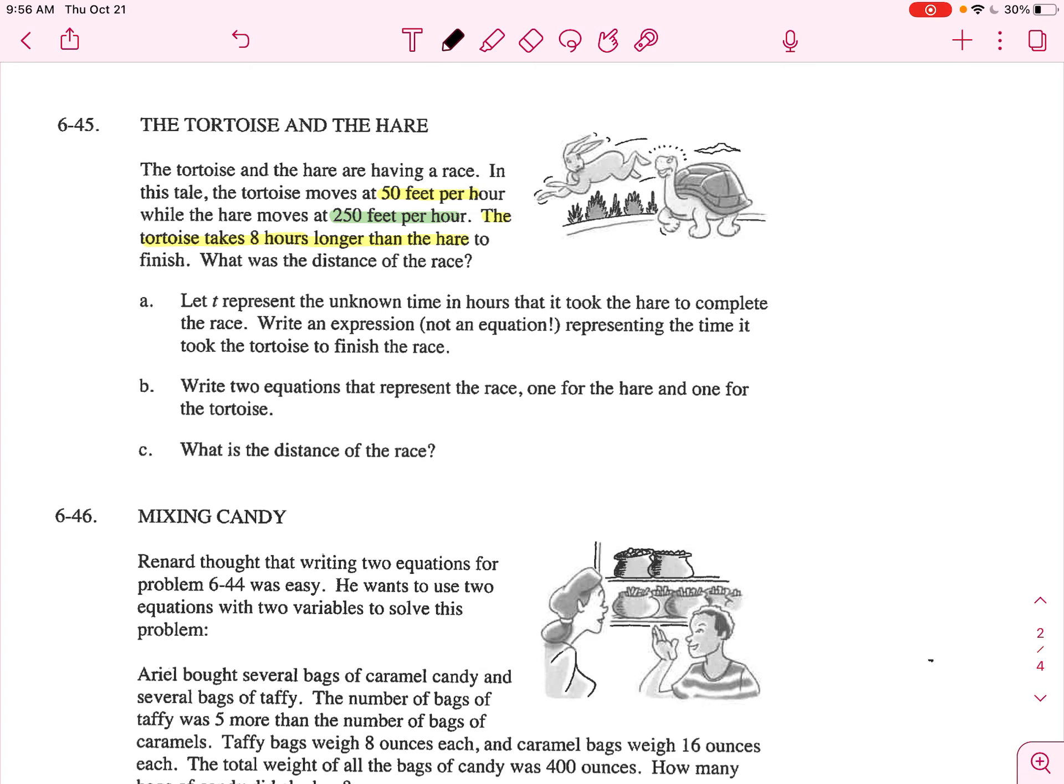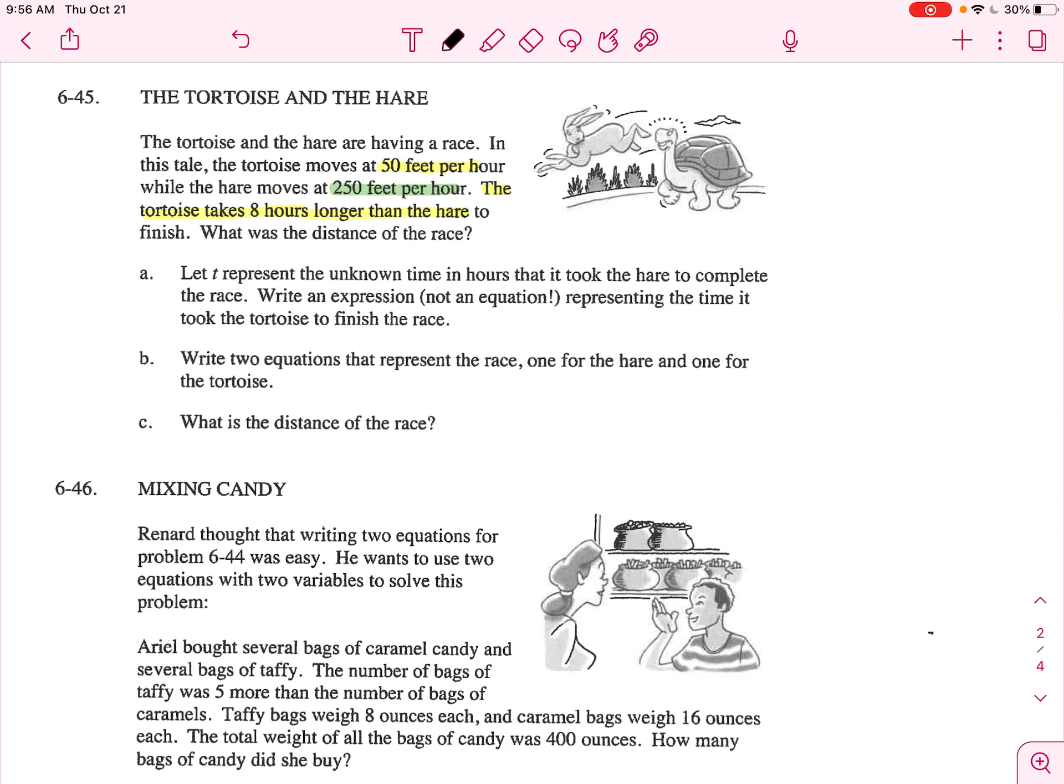So A says, let T represent the time in hours it took the hare to complete. So T equals the time of the hare to complete the race. Well, it says, write an expression, not an equation, representing the time it took the tortoise to finish the race. Well, it took the tortoise eight hours longer. So we can say that the time of the tortoise is T plus eight.